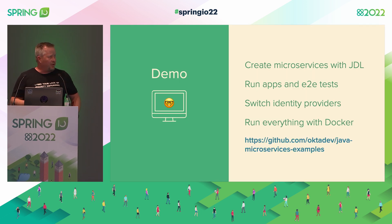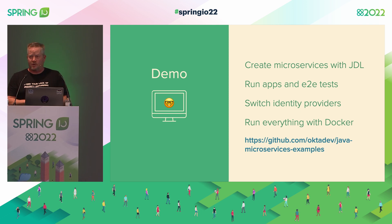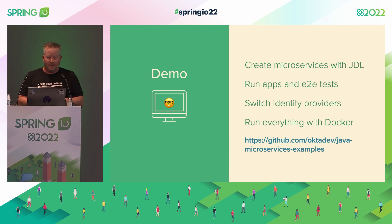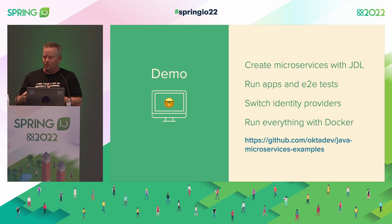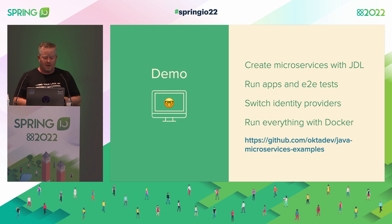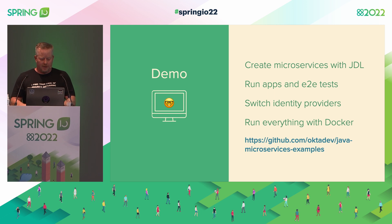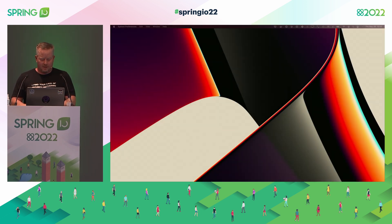What I'm going to show in this demo today: creating a microservices architecture with JDL, starting Docker containers, using Gradle, showing how everything works, then editing to switch from Keycloak — the default — to Okta, then using Docker Compose to run it all, and maybe doing some end-to-end tests.